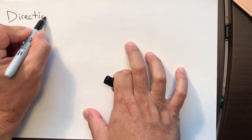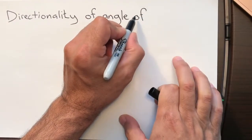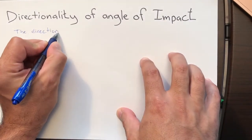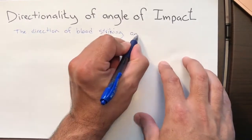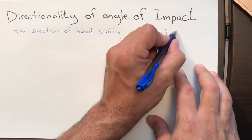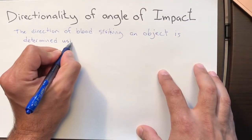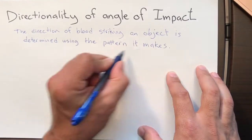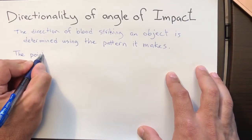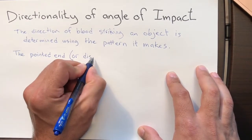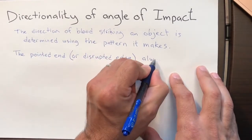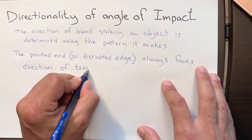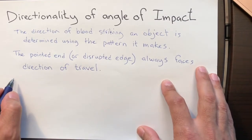Next, let's talk about the directionality and angle of impact. The direction of blood striking an object is determined by its pattern. The pointed end — the tail, or disrupted edge — always faces the direction the blood was traveling. When a blood droplet hits and travels from left to right, the tail or disrupted edge will be on the right-hand side.